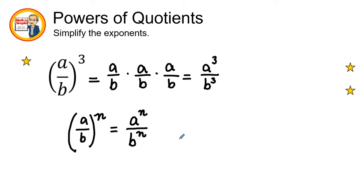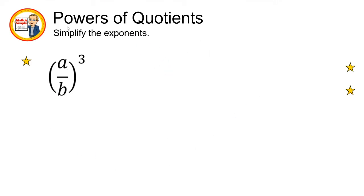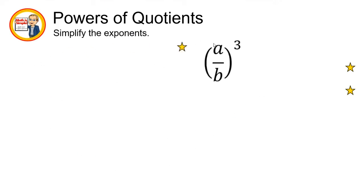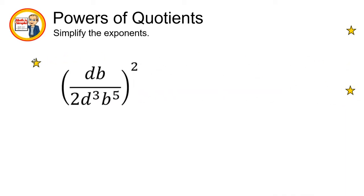This is something we're going to need some practice on, so let's get started. The next equation we have is the quantity of d times b over 2d to the third power b to the fifth power, all raised to the second power.